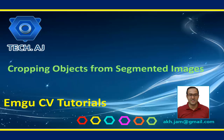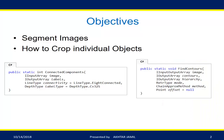Hello and welcome to this new tutorial. Today I'm going to show you how we can crop individual objects from a segmented image. Particularly, I will be using two methods: connected components and find contours. This is one way of doing it, and there is another way which I will describe in the next video.